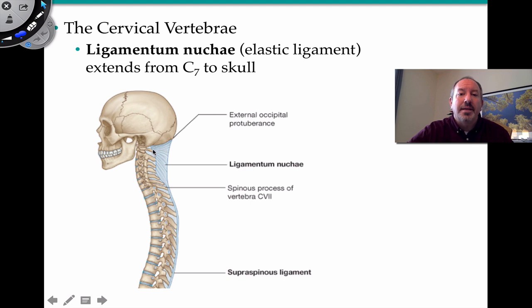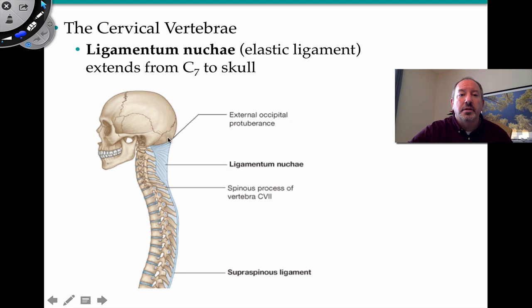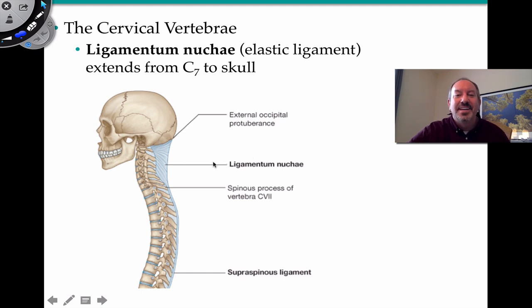There is also a ligamentum nuchae — an elastic ligament attaching from the external occipital protuberance, a bump on the back of the occipital bone, traveling down the cervical backbone to C7. It holds the cervical vertebrae in place. Below C7, it becomes the supraspinous ligament, traveling down the rest of the spine.